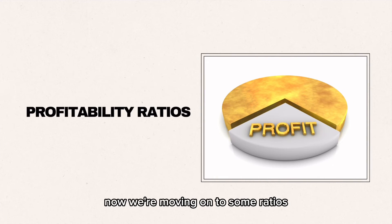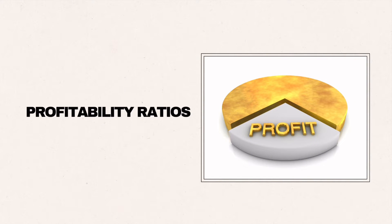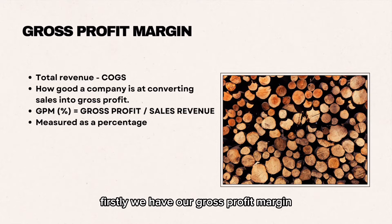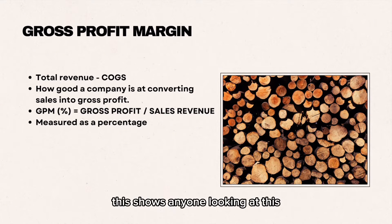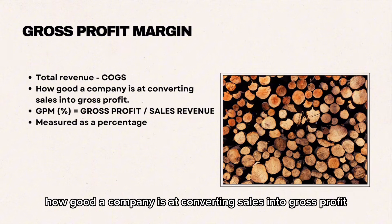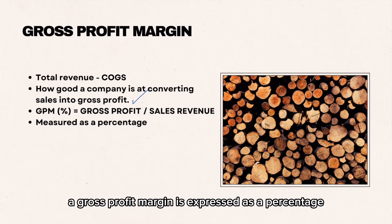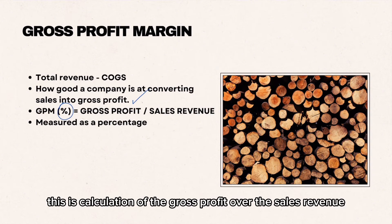Now we are moving on to some ratios. Our first one is profitability ratios. Firstly, we have our gross profit margin. The calculation for this is total revenue minus cost of goods sold. This shows how good a company is at converting sales into gross profit. A gross profit margin is expressed as a percentage — calculated as gross profit over sales revenue.